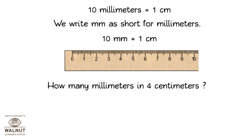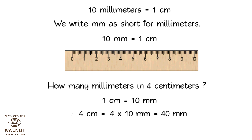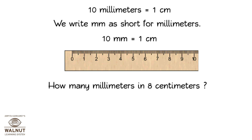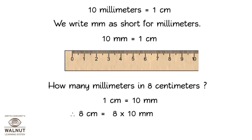How many millimeters are there in four centimeters? How many millimeters are there in eight centimeters? One centimeter is equal to 10 millimeters. Therefore, 8 centimeters is equal to 8 into 10 millimeters, which is equal to 80 millimeters.